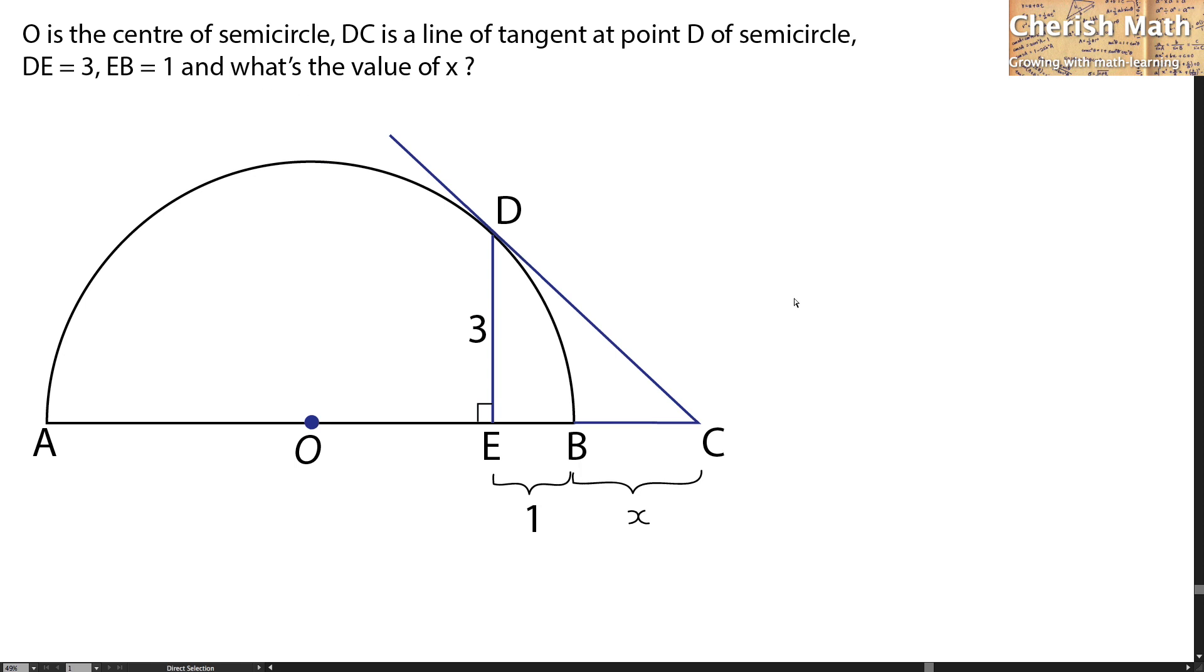Let me present the first method to deal with this problem. I'm going to draw a line connecting from O to point D. This is the radius of the circle. And this length from O to E is going to be R minus 1, since R is the radius of the circle.